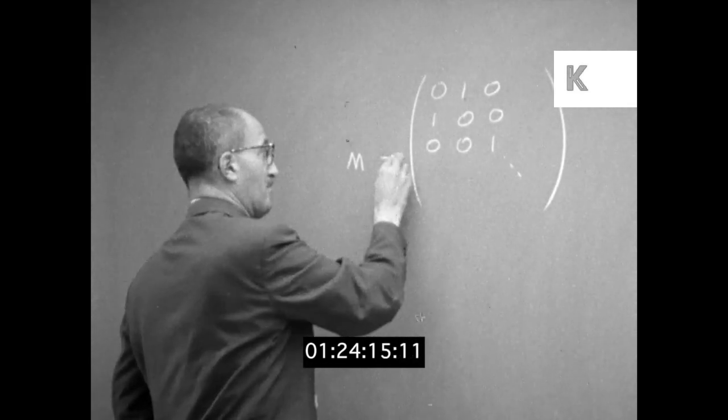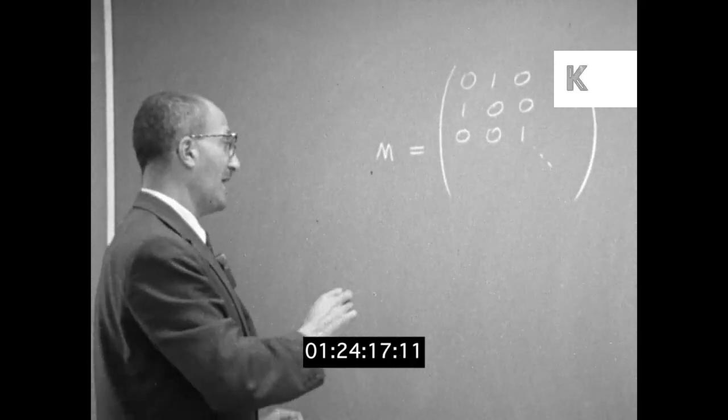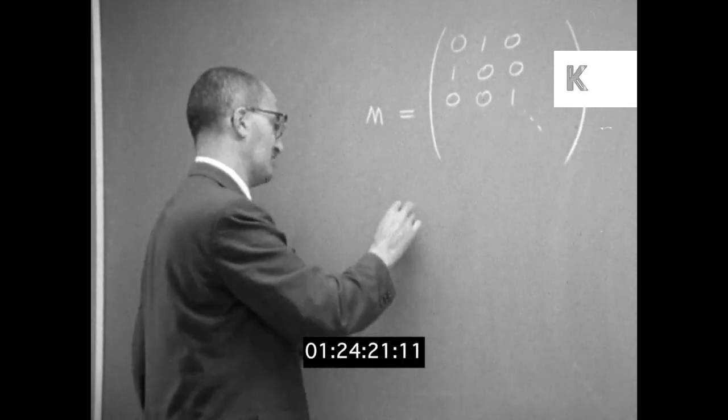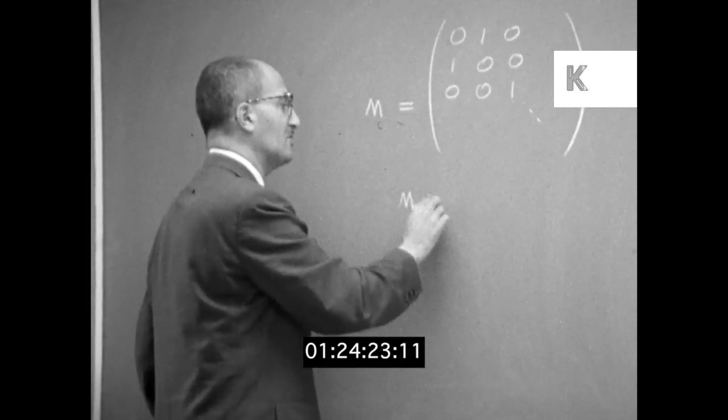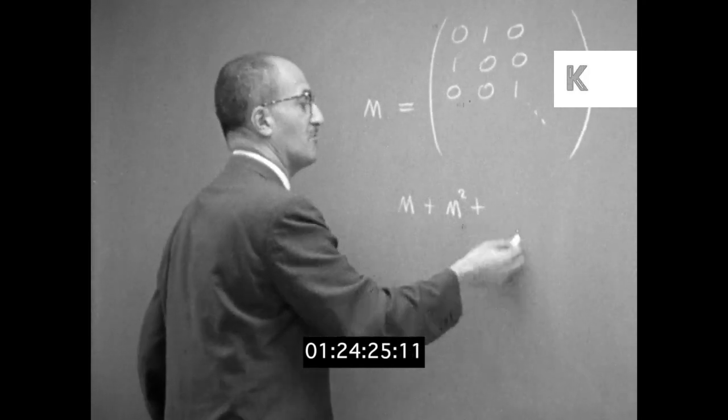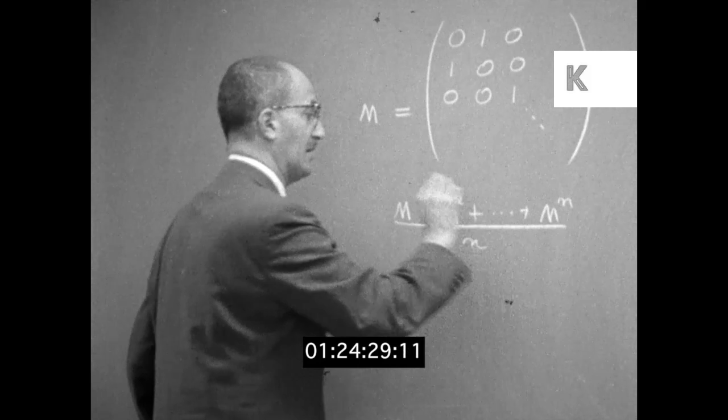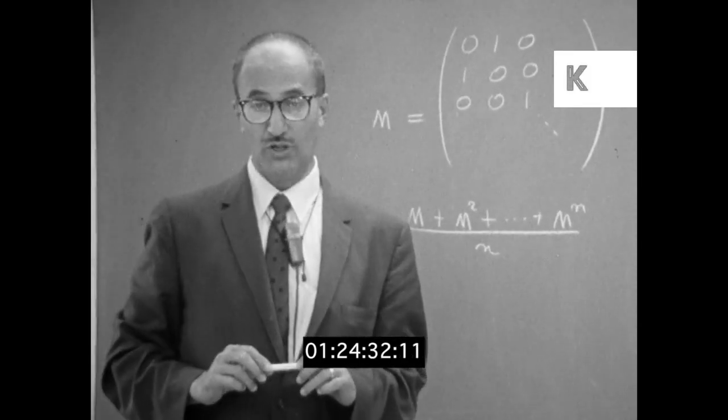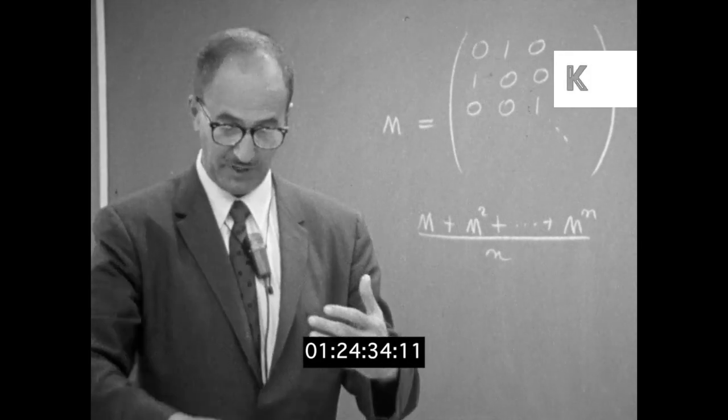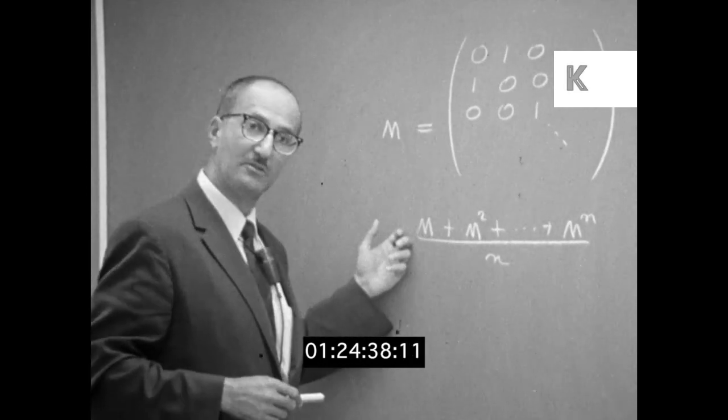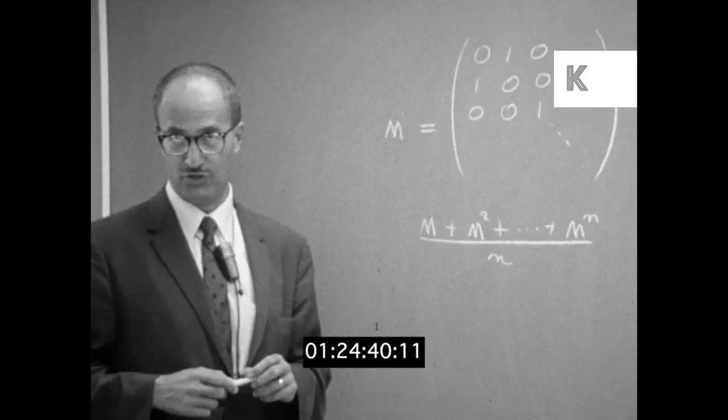If such a matrix is M, then the averaging property of the shaking of the sack of marbles is described by forming the average M plus M square plus and so on up to M to the N over N, and the assertion about the marble spending a third of its life in the bottom third becomes a theorem about the limit of the sequence of averages.